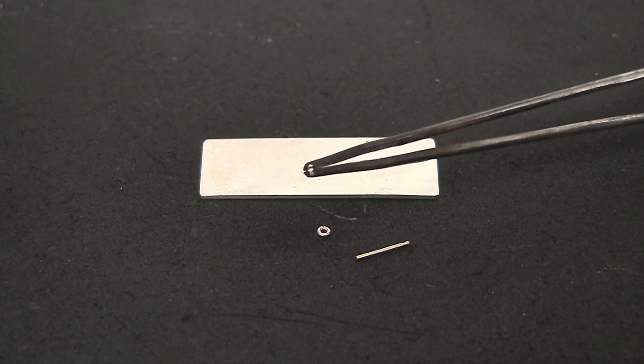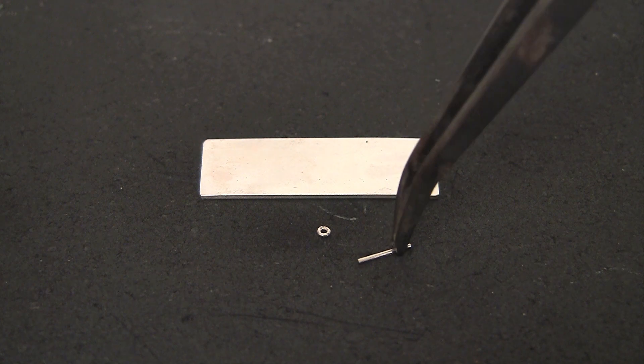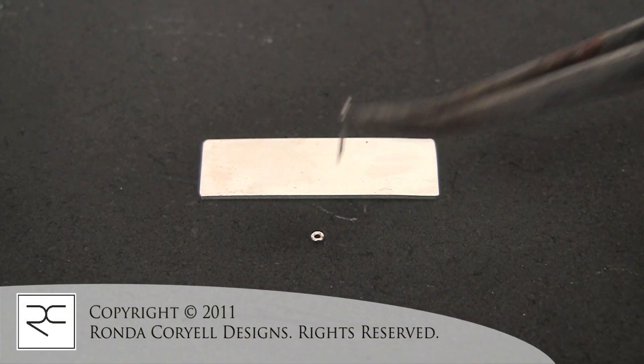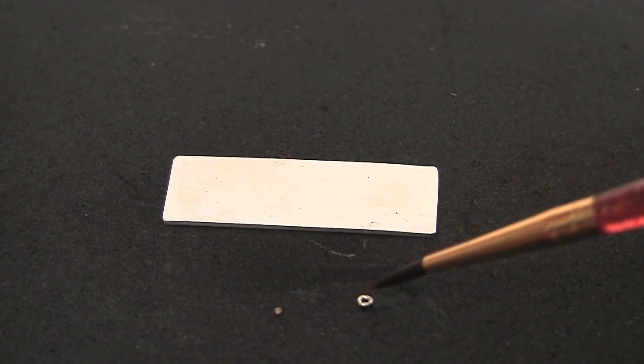I made a notch in my tweezers that makes it easier to pick up and hold an earring post. I have a jump ring that is 1 millimeter inside diameter and my post is 0.8 millimeters.